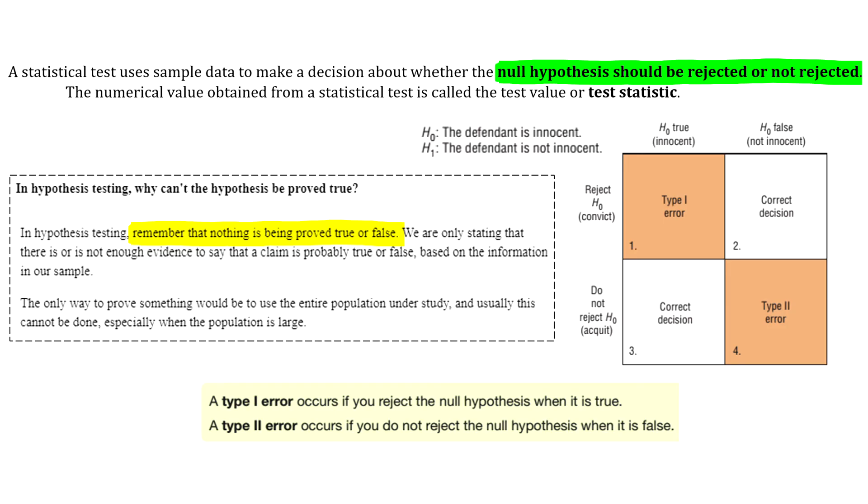There are four possible outcomes for a hypothesis test, since the null hypothesis may or may not be true, and a decision is made to reject or not reject it. These four outcomes are shown in the figure to the right. In almost every statistics textbook, you'll see this courtroom analogy to help illustrate the four possible outcomes.